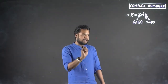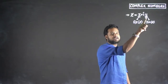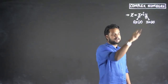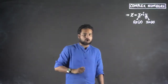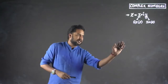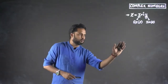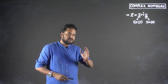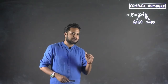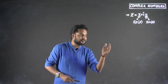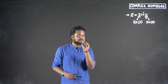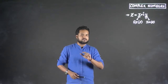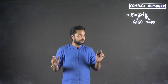Remember one thing — I have underlined only y, not iy. So if I have a complex number, just visualize: I have a complex number 2 plus 3i. Then what is the real part? 2. What is the imaginary part? 3. It's not 3i. Remember this clearly — 3 is the imaginary part.